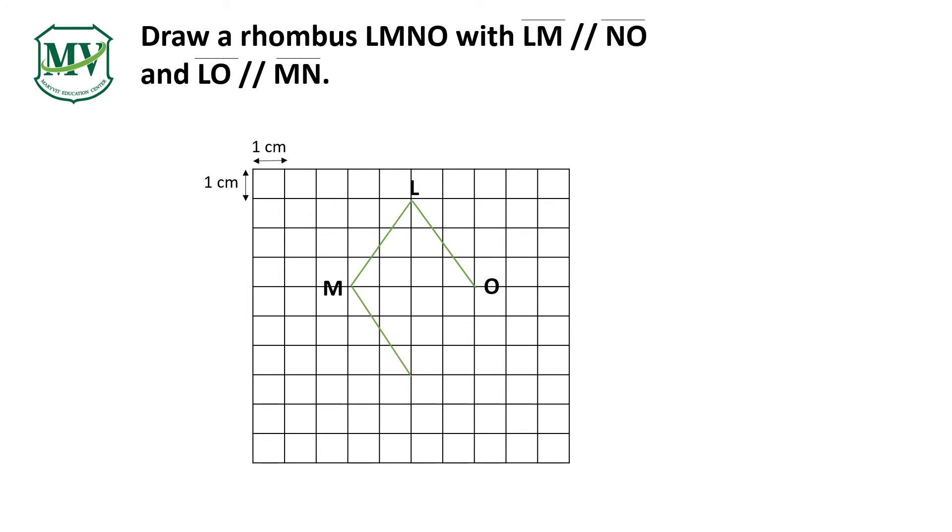Step 2. Draw a line MN and line NO, the same on the screen. Make sure that the line LM and line NO and line LO and line MN are parallel lines.